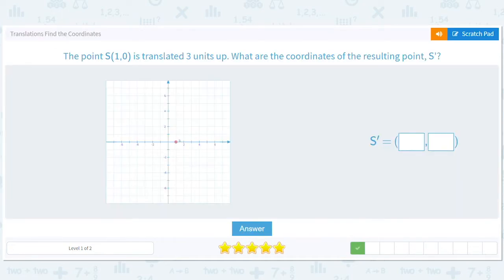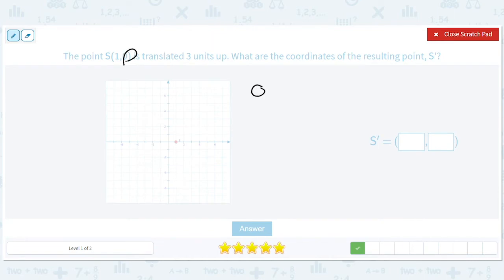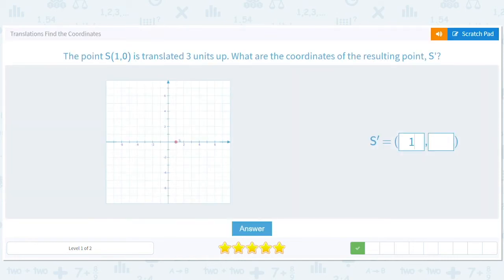Okay, so we're moving up. So we're going to add three to the y-coordinate. So we can move it up three. And we see that our answer is going to be one, three. You can also just look at it on the graph and do it, whatever you prefer.